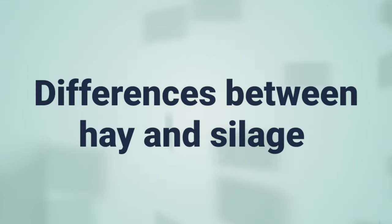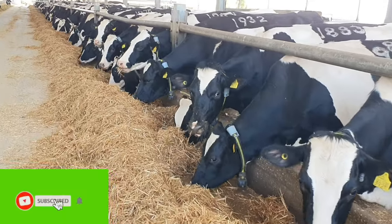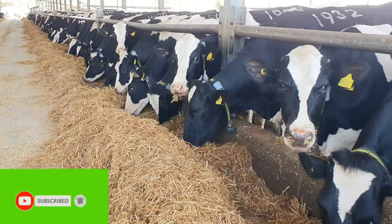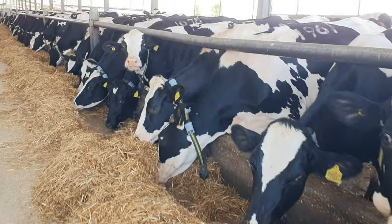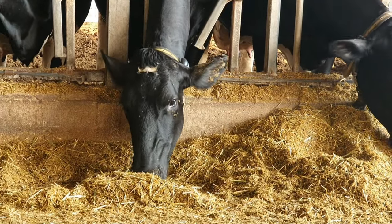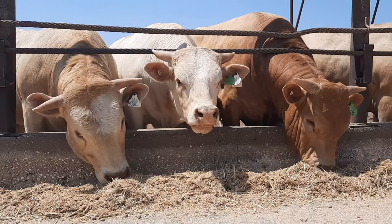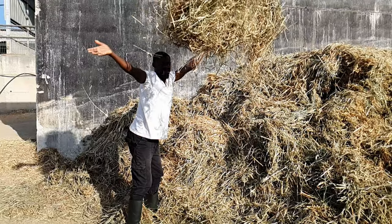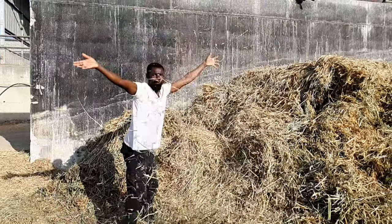On Rising Farmers, we're going to discuss the differences between hay and silage. Both hay and silage are important sources of livestock feed and popular ways for farmers to feed livestock when they are unable to graze. They are both comprised of grass and considered a preservation method of forage.